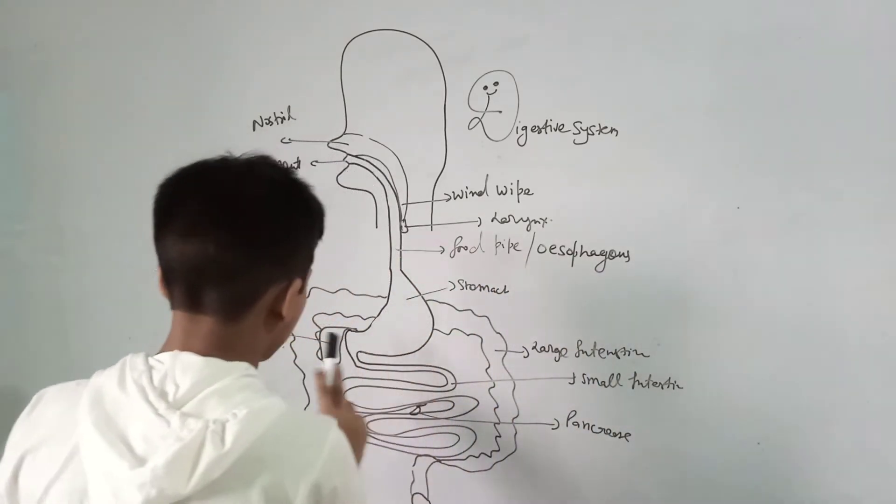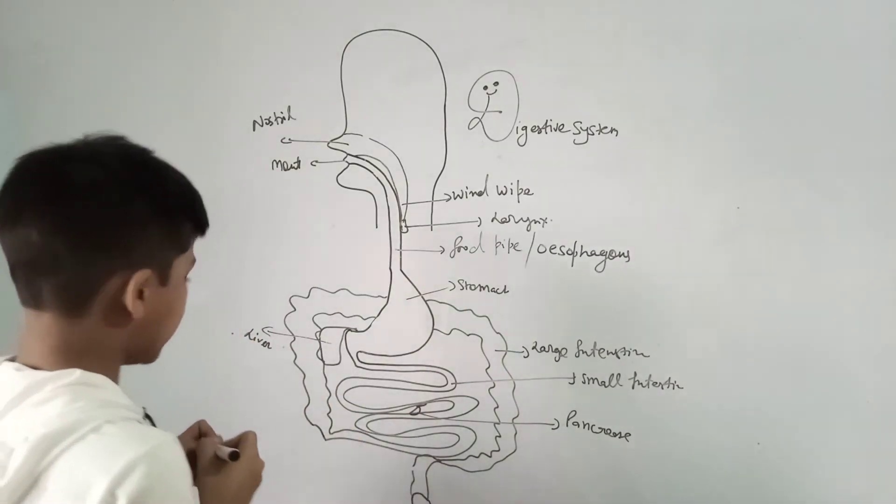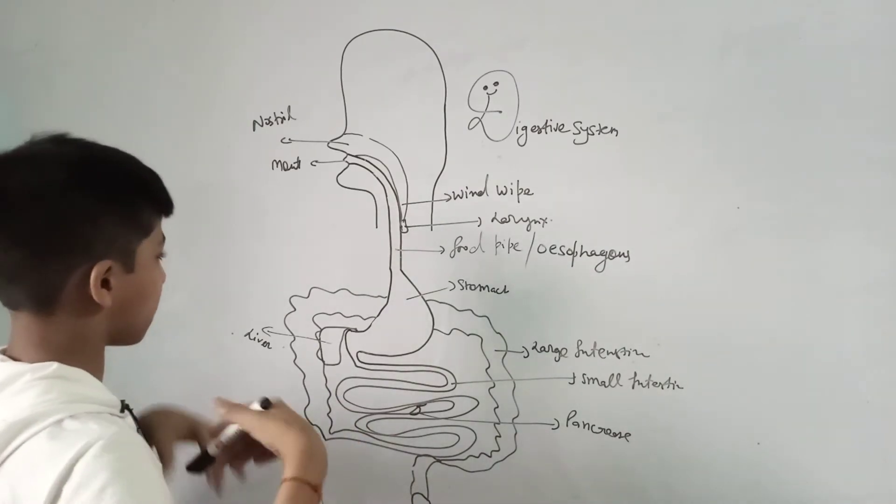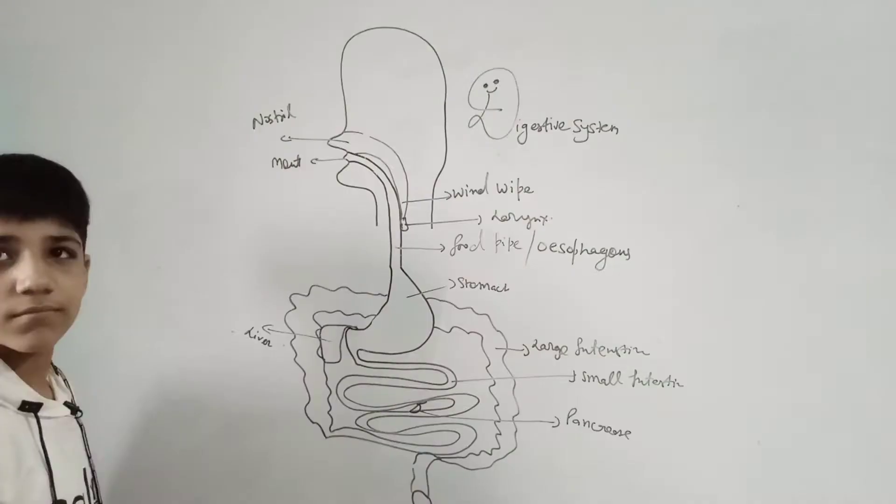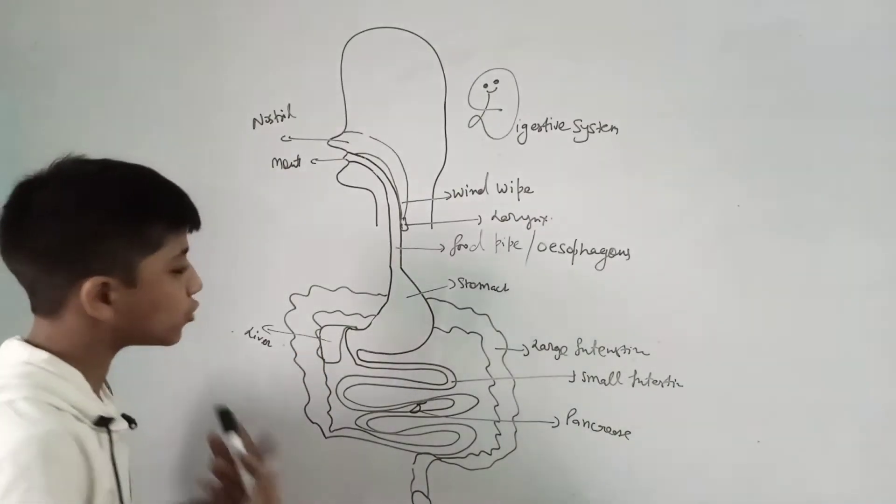Then it comes to the liver. What is the liver? The liver is a part which helps our body in some ways. The liver contains some chemicals to digest the food.